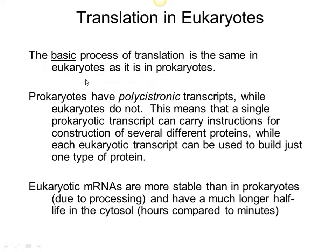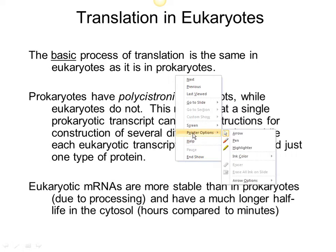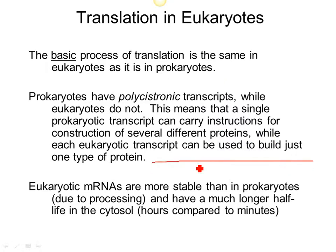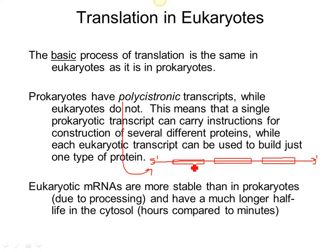The basic process of translation is the same in eukaryotes, but there are a few differences. Prokaryotes have polycistronic transcripts — a cistron means a gene, so a polycistronic transcript means one mRNA that carries instructions for making more than one protein. One mRNA could have a start codon and stop codon for one protein, and then another start and stop codon for a second protein, and so on. Multiple proteins can be encoded within one mRNA molecule. That's only possible in bacterial cells; in eukaryotes, one mRNA can only carry instructions for making one protein.